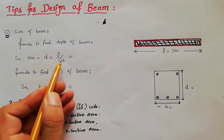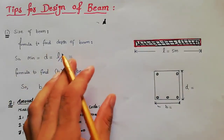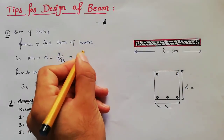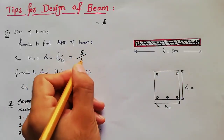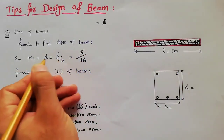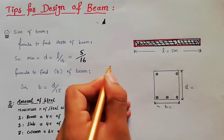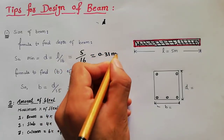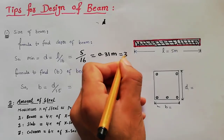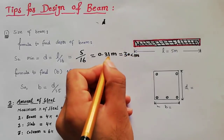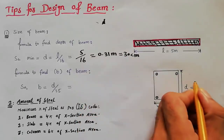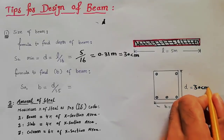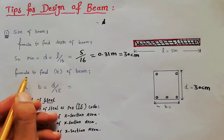Using the formula d = L / 16, with L equal to 5 meters: depth = 5 / 16 = 0.31 meters, so approximately 30 centimeters. We get the depth of beam as 30 centimeters using this formula.